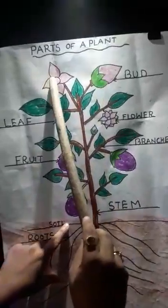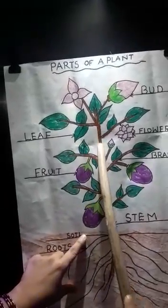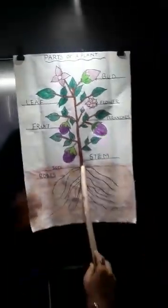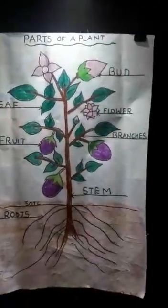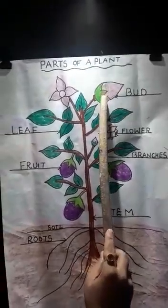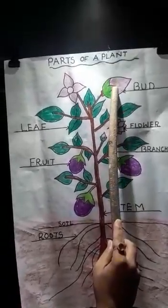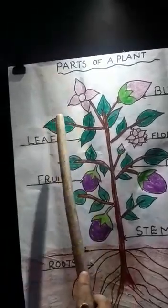Root system consists of roots, and shoot system consists of buds, flowers, leaves, branches, fruit, and the stem. Now let's see what are the functions of these parts — why it is important for a plant to have all these things. First of all, a bud is an early stage of a flower; it is an unopened flower. When it opens, it takes the shape of a flower.